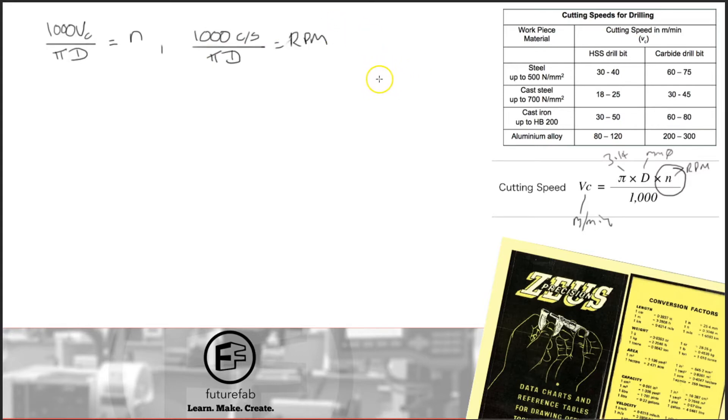So quite often you'll see this written as something like this: 1000 cutting speed over Pi D equals RPM. And there's various iterations of this, depending on exactly whether you're going to use radius or surface feet per minute, etc. But for our case, this is going to be fine.